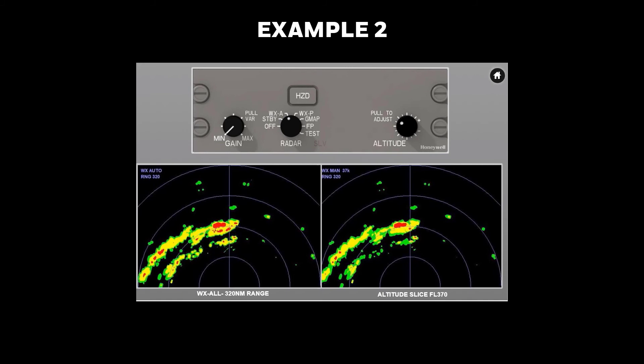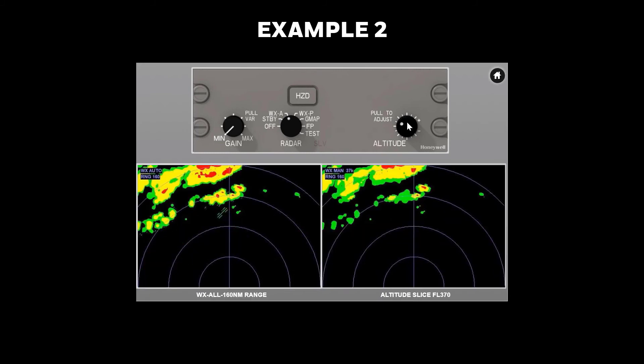The 320 nautical mile range display gives the big picture situation. The 160 nautical mile display gives more detail on the closer line of storms the crew will analyze to find a deviation path.